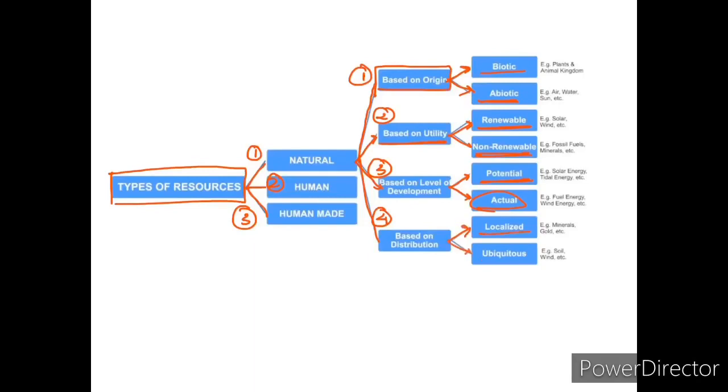The fourth and last classification of natural resources based on distribution is localized and ubiquitous. Let us understand the classification of resources in detail. First of all, I'll explain the natural resource and its classification in detail.